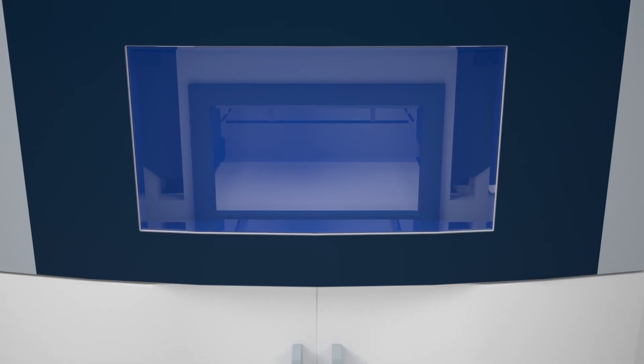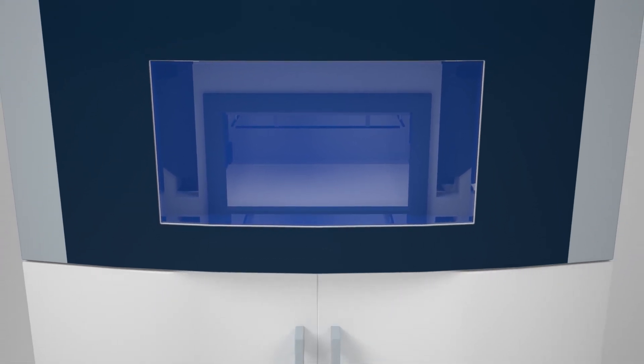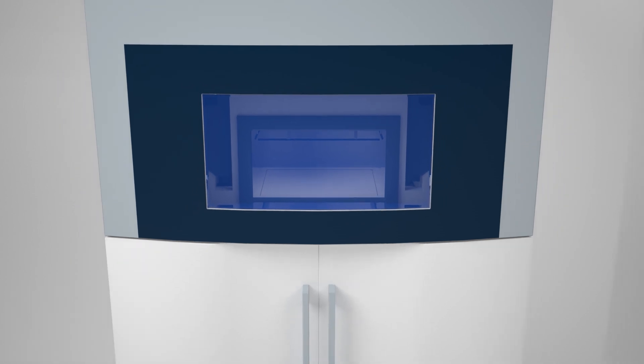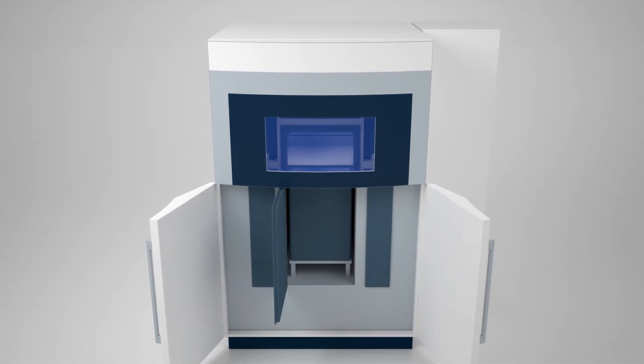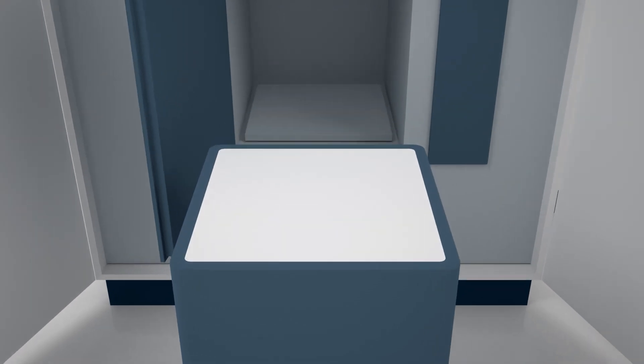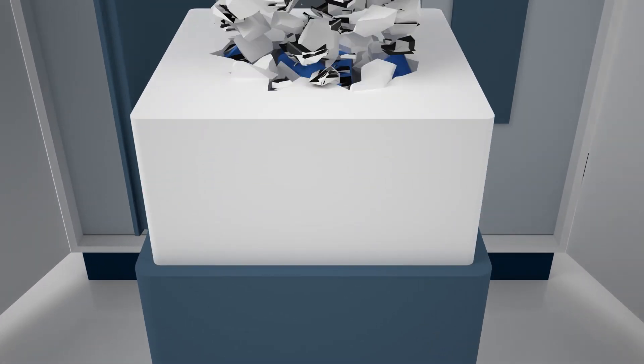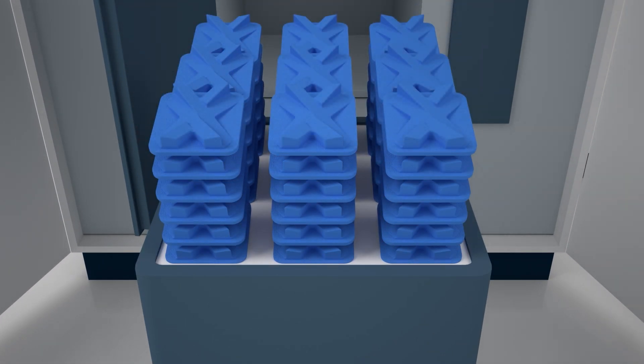Once the printing process is complete, the build chamber needs to cool down to ensure optimal mechanical properties and prevent warping of the parts. The finished parts are removed from the build chamber, separated and any excess powder is cleaned off them.